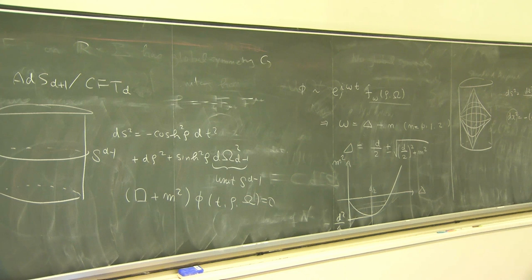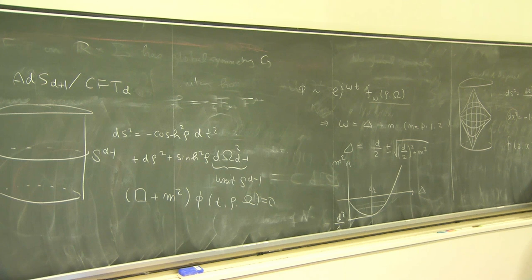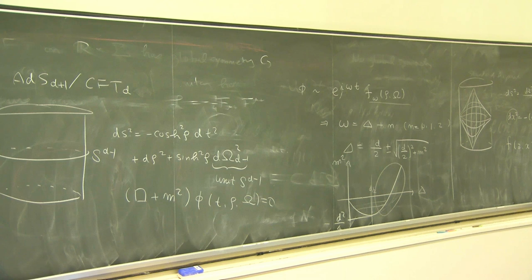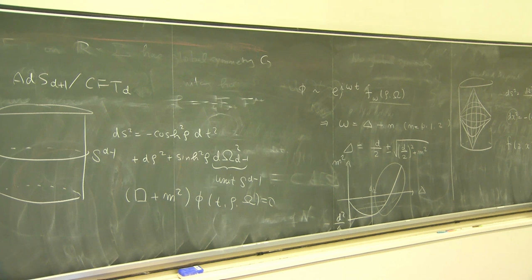You have a standard Minkowski metric on the boundary and a radial direction z. Near the boundary, the field phi has behavior going like z to the D minus delta plus z to the delta. For delta in a certain range, the z-to-delta term is the normalizable mode, and the z-to-(D minus delta) part is non-normalizable, since it diverges as z goes to zero.